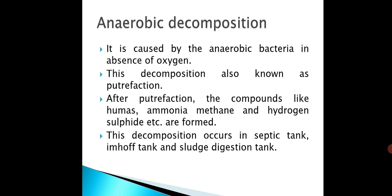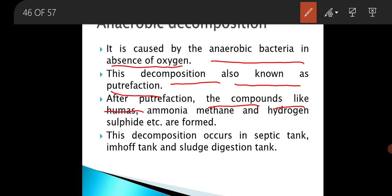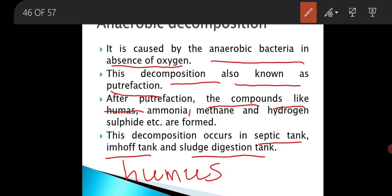Anaerobic decomposition is caused by anaerobic bacteria in the absence of oxygen, and this type of bacteria can survive without oxygen. This decomposition is also known as putrefaction. After putrefaction, compounds like humus, ammonia, methane, hydrogen sulfide, carbon dioxide, nitrogen, and hydrogen are formed. This type of decomposition generally occurs in septic tanks, Imhoff tanks, and sludge digestion tanks.